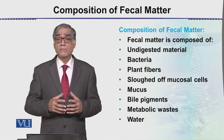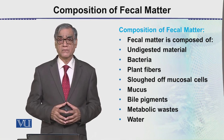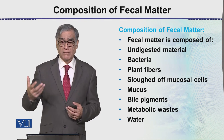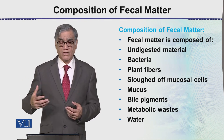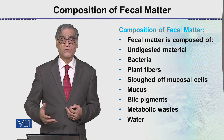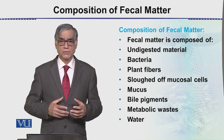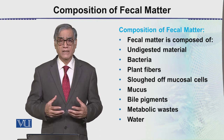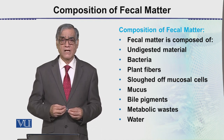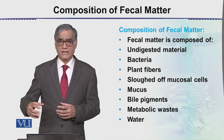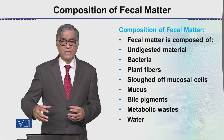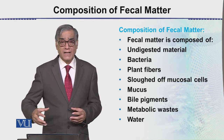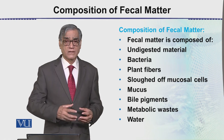Then there is mucus. Mucus is present from the beginning at the mouth, and as the food's digestion progresses, mucus glands form and mix with the food. This is so that the material may pass through the intestine.